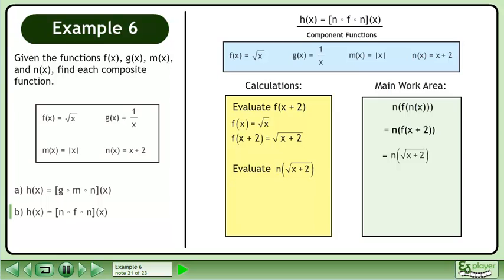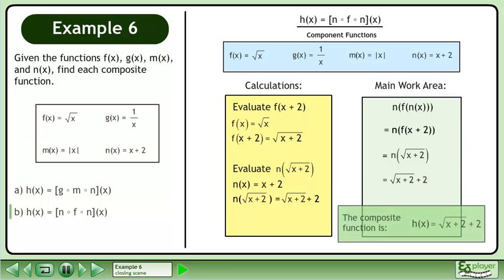Before we can continue, we need to evaluate n at the square root of x plus 2. We know that n equals x plus 2. So n at the square root of x plus 2 equals the square root of x plus 2 plus 2. The composite function is h equals the square root of x plus 2 plus 2.